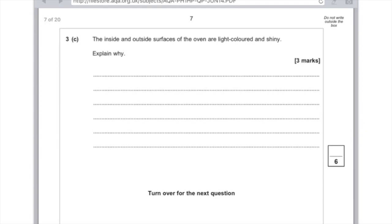I'm just going to finish by looking at this bit of a question about infrared radiation. The inside and outside surfaces of an oven are light coloured and shiny. Explain why. It's good that the inside surface is shiny because it's a good reflector of infrared radiation. It's good that the outside surface is shiny because it's a poor emitter of infrared radiation, and what that does is it increases the energy reaching the food inside the oven.